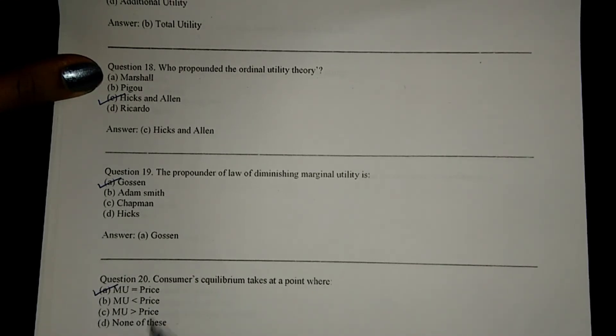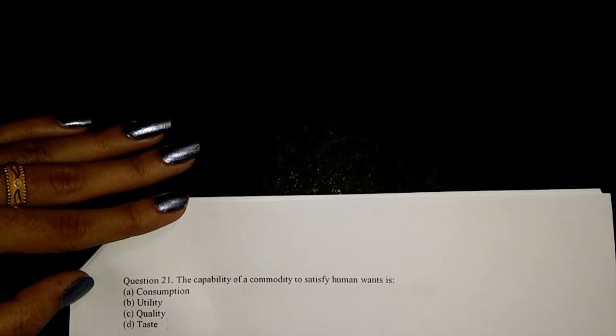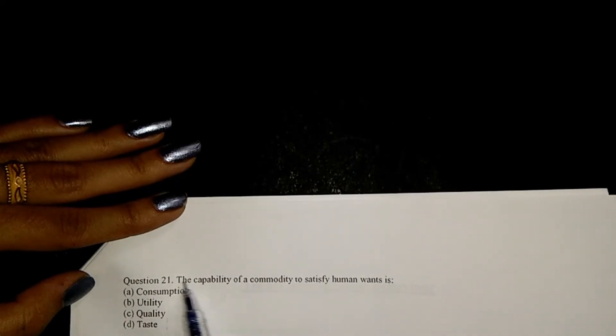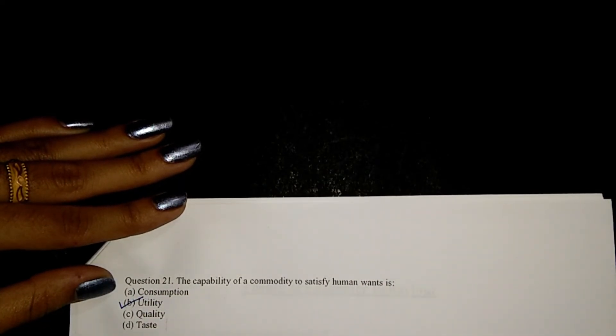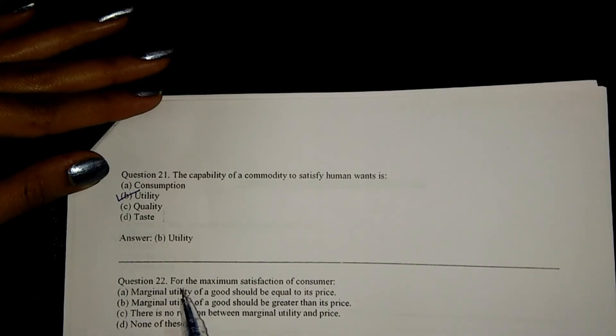Next, consumer equilibrium takes place at a point where MU equals price, that is A. Next, the capability of a commodity to satisfy human want is utility, option B.